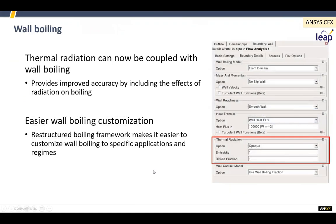For the boiling model in CFX — the RPI boiling model — there have been a couple of major enhancements. One is to include thermal radiation, so that as a surface gets hotter, you actually get the thermal radiation effects. It's also been reconfigured to make it easier to customize and to put in your own correlations. Those using it are going to find that a significant improvement.